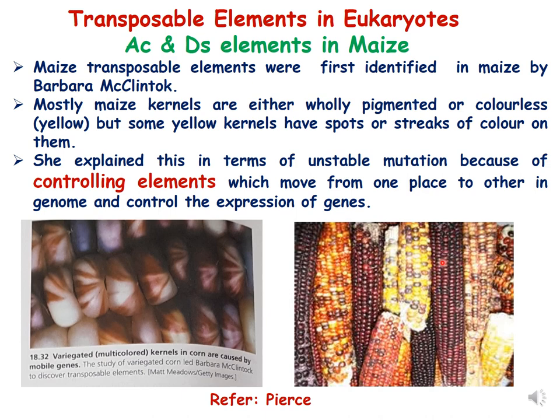Mostly when you see maize kernels they are either wholly pigmented, colorless, or yellow. But some kernels have spots or streaks of color on them. Some are totally yellow, some are totally pigmented, and some have streaks of yellow and other pigment. She explained this in terms of unstable mutation because of controlling elements which move from one place to another in the genome and control the expression of genes. You can refer to Peers — this PPT is made from Peers, but you can take any book of genetics.